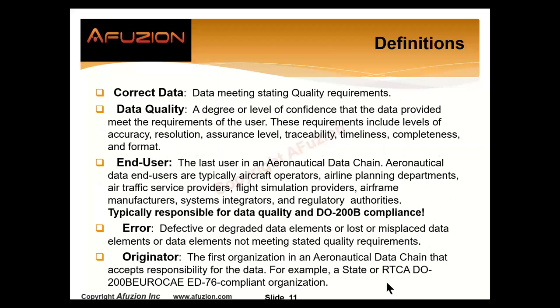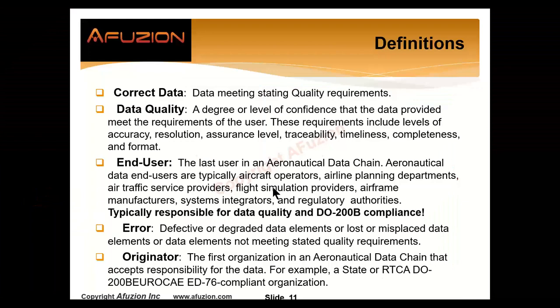Correct data means the data meets the stated quality requirements. Data quality is a degree or level of confidence that the data provided meets the requirements of the user — including accuracy, resolution, assurance level, traceability, and timeliness. Errors are defective or degraded data elements that are lost or misplaced, or a data element that doesn't meet its strict DQR, data quality requirements.